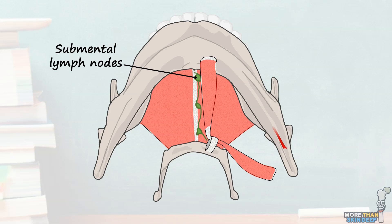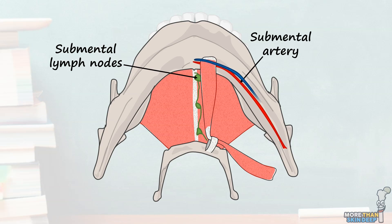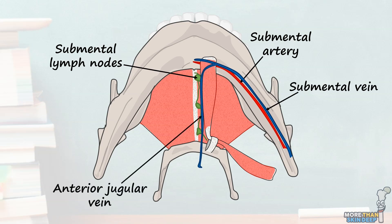We also have the terminal part of the submental arteries, which arise from the facial arteries, and the submental veins, which drain into the facial vein. Lastly, we have the anterior jugular vein, which originates up here in the submental triangle before coursing downwards to drain much of the anterior neck.